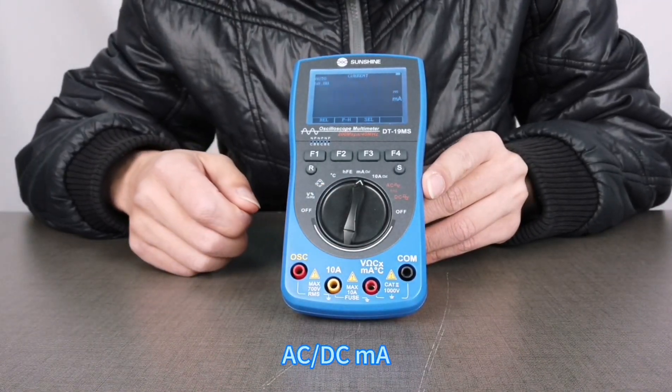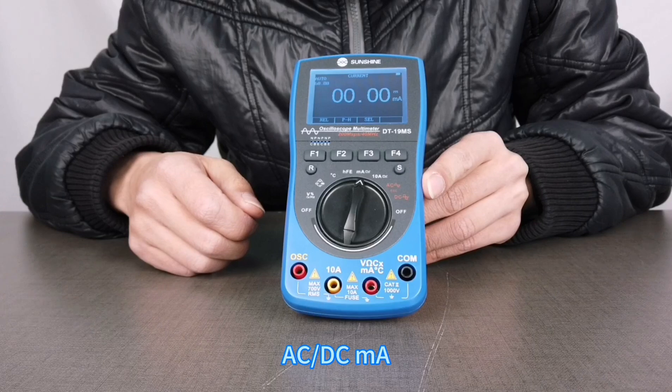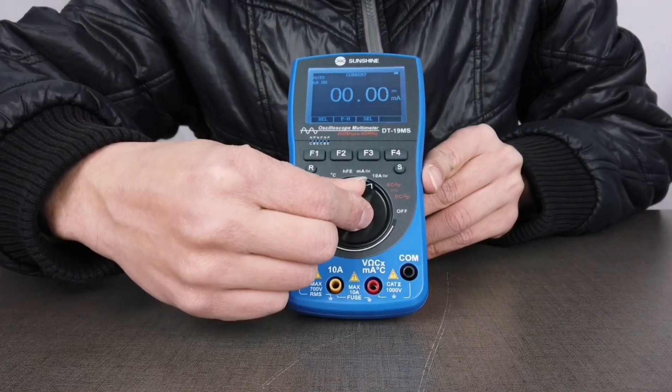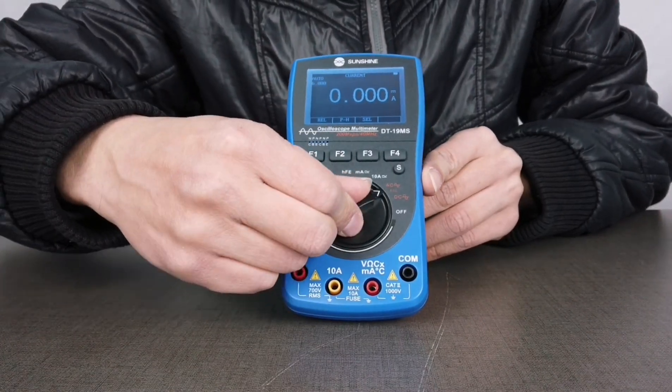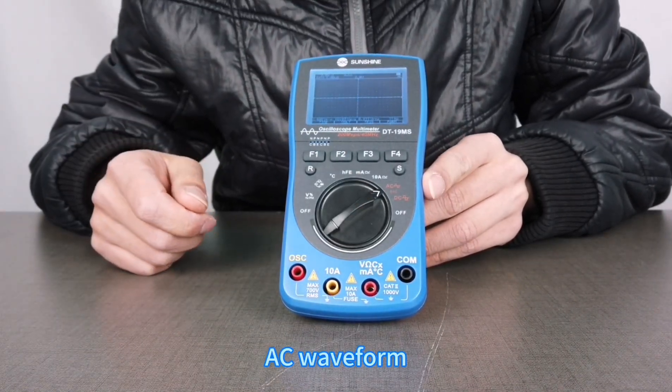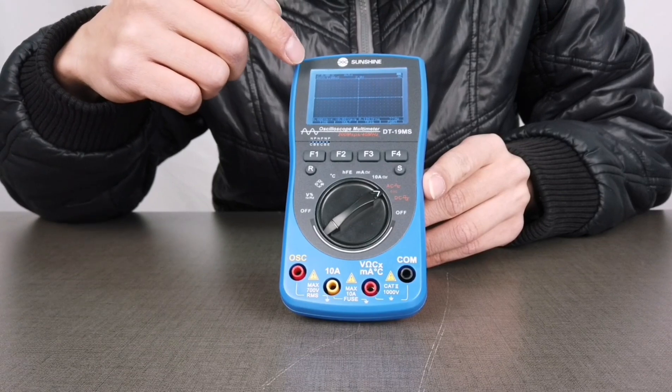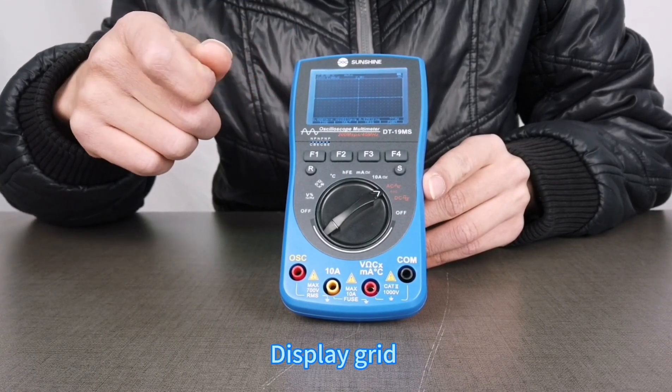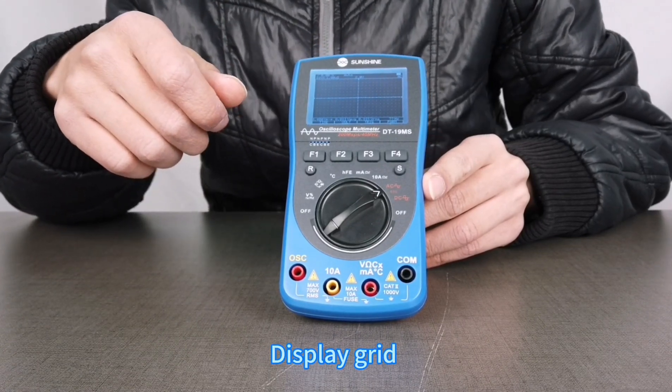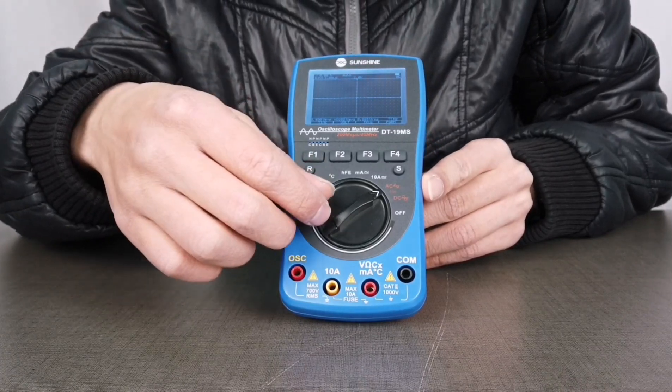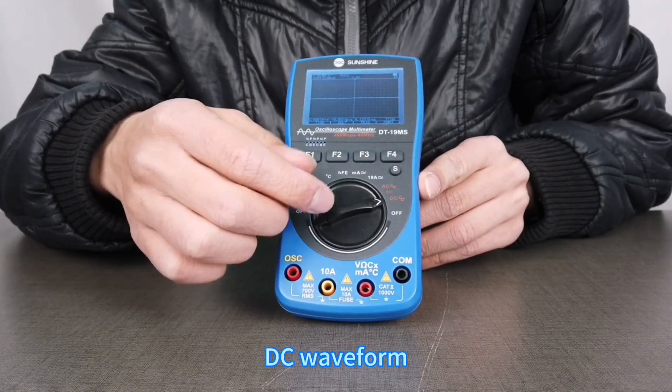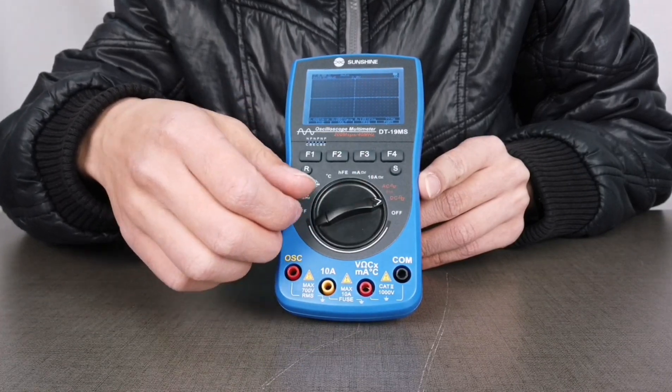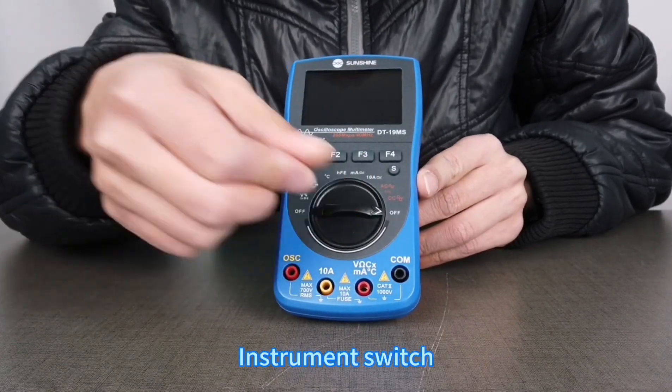It has AC/DC mode selection, AC/DC current measurement, AC waveform display with grid, DC waveform display, and an instrument power switch.